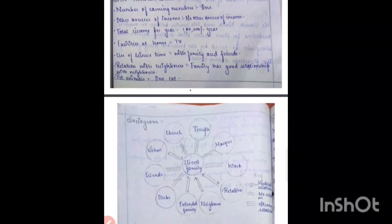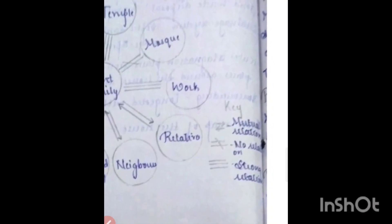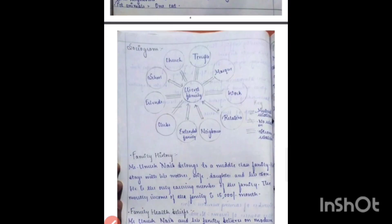Then comes the socioeconomic status, followed by the sociogram, where you have to mention how the client's relationship is with others. If the patient has a mutual relationship, draw two arrows facing each other. When there is no relation, draw two lines with a cross. For a strong relation, draw three lines.